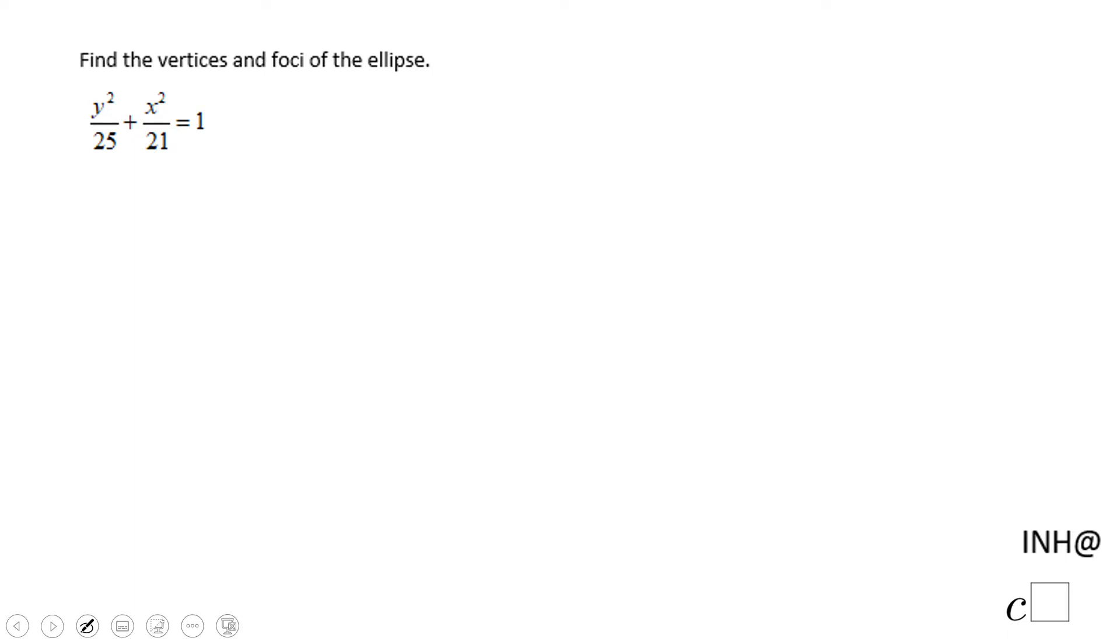Welcome or welcome back to I Need Help at C Squared. In this example we have an ellipse and we need to find the vertices and the foci. This ellipse here has a center at 0 and 0.